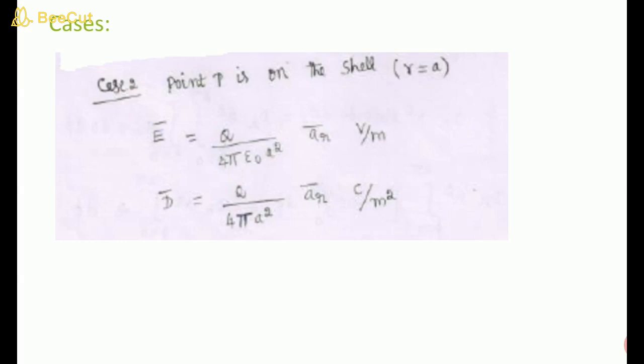Case 2: r = a (point P is on the shell). Q = 4πε₀ r² D, with r = a substituted. D and E values are computed by placing r = a. Case 3: r < a (point P inside the shell). The Gaussian surface inside encloses no charge, so Q = 0, therefore D = 0 and E = 0 inside the shell.